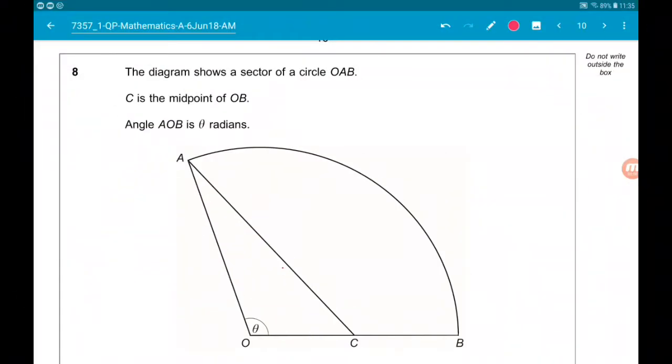Okay, question 8. First up, we have sectors. So, the diagram shows a sector of a circle O, A, B.